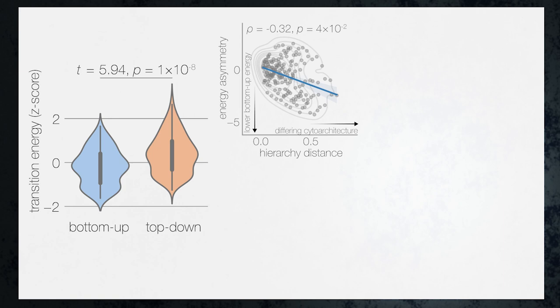Furthermore, we observed that as the distance separating brain states along the hierarchy grew larger, the energy asymmetries became more negative. This indicates that bottom-up transitions had lower energy with greater distance between brain states along the hierarchy.